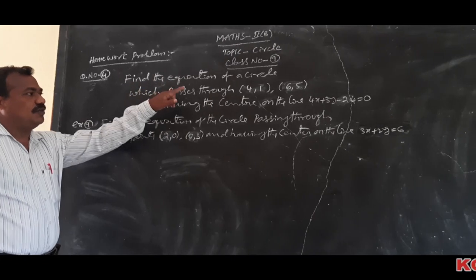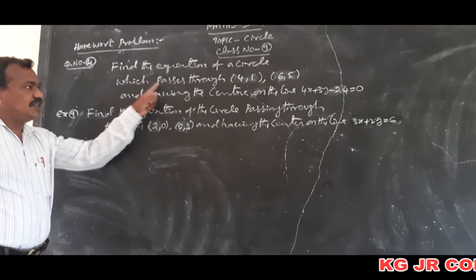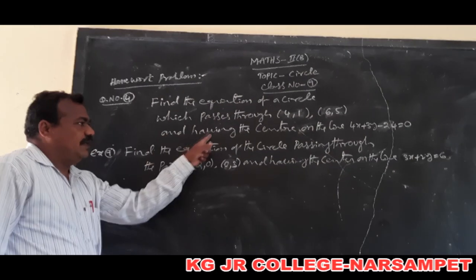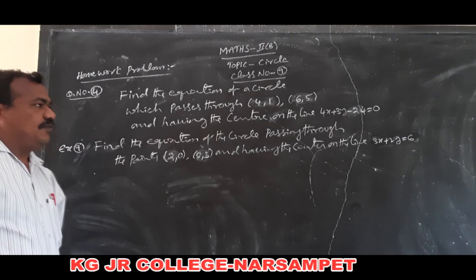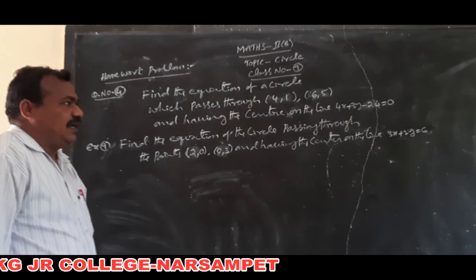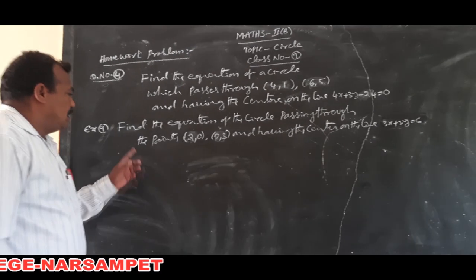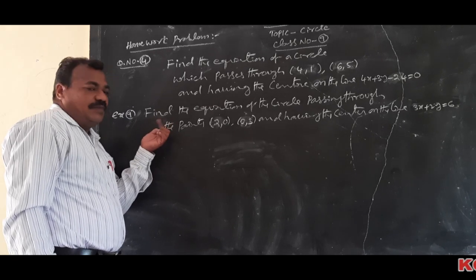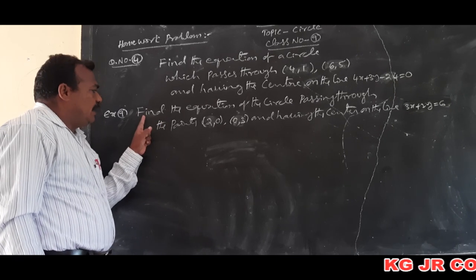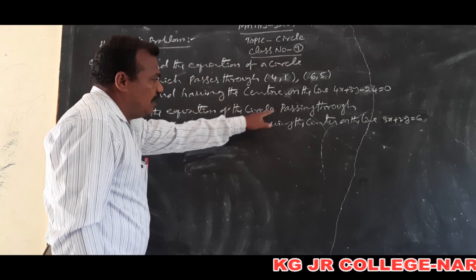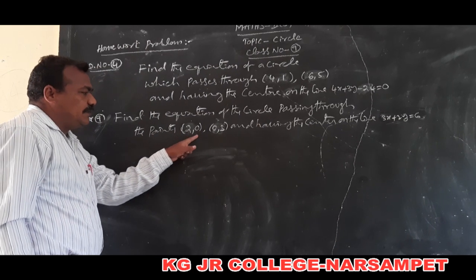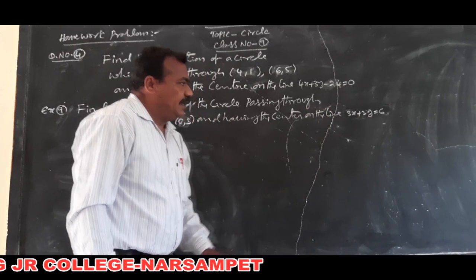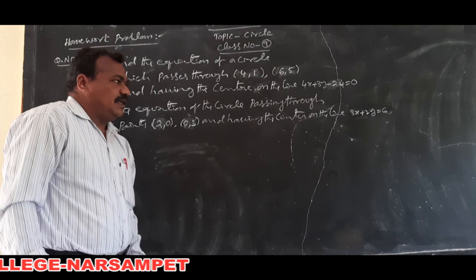Now question number 2 as an example problem: find the equation of a circle which passes through the points (4, 1) and (6, 5), having the center on the line 4x + 3y - 24 = 0. And here is a homework problem using the same method: find the equation of a circle passing through the points (2, 0) and (0, 3), having the center on the line 3x + 2y = 6.